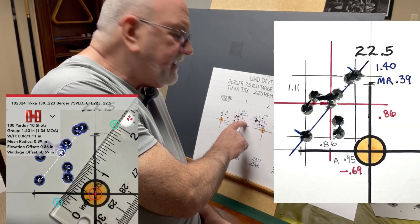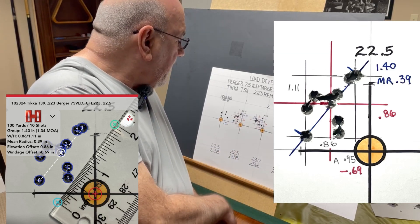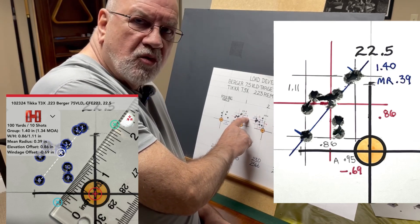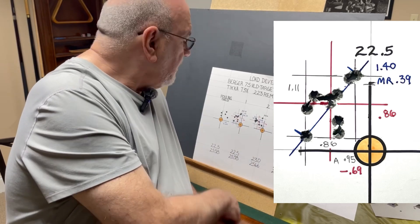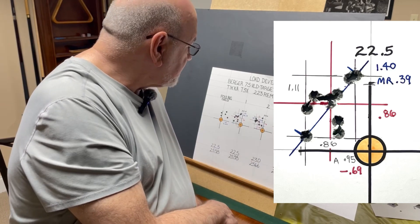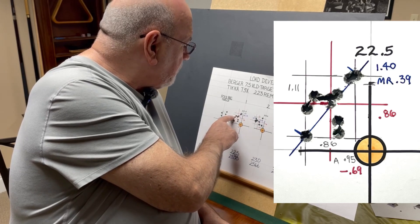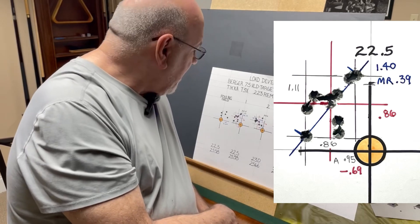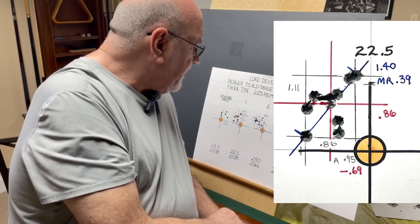Nevertheless, you just saw this group at 22.5 grains. The average point of impact is 69 hundredths to the left and 86 hundredths of an inch high, and that's about where I wanted it. We had a 1.40 extreme spread and a mean radius of 0.39. A radius is half of a circle, so if you double that that becomes a 0.78 inch average group size. You see the pencil lines here. The group has a height of 1.11 inches and a width of 0.86 so that gives us an area of 0.95, so the area that that group is covering is just under an inch.